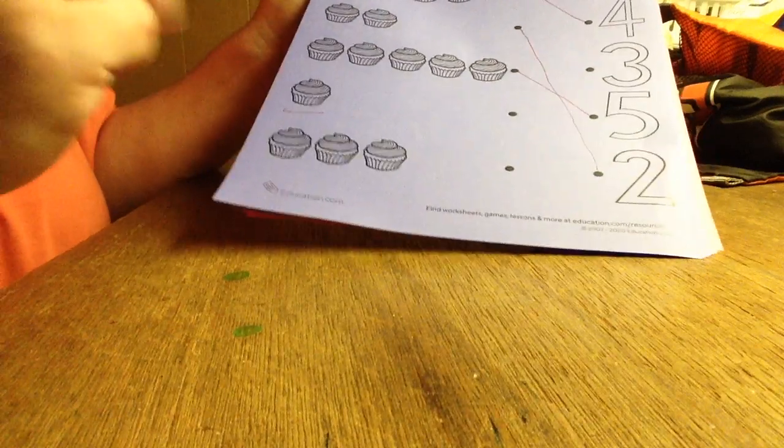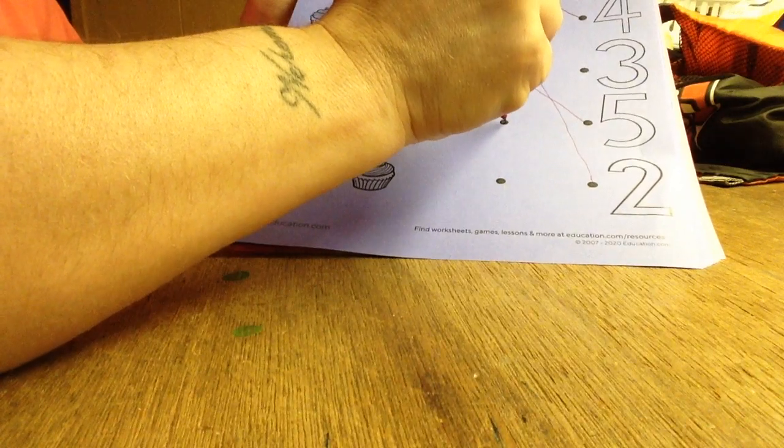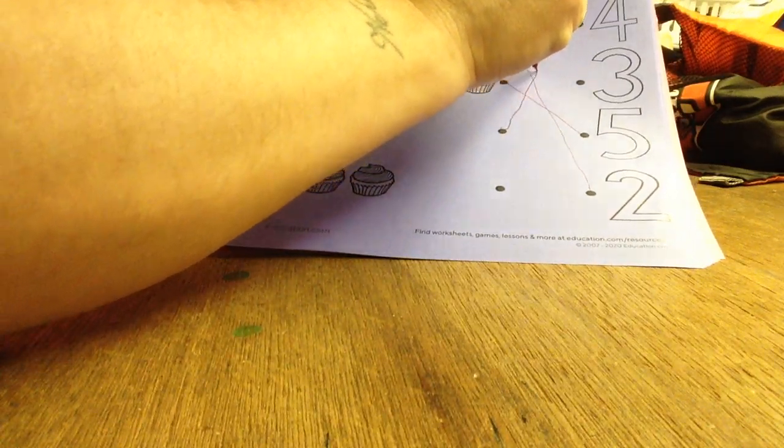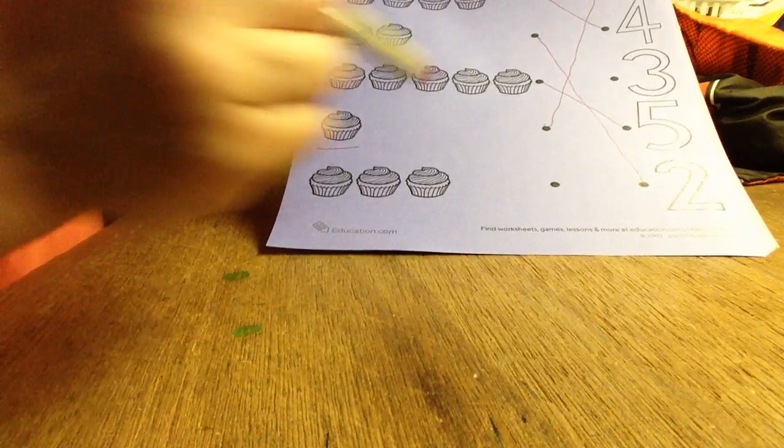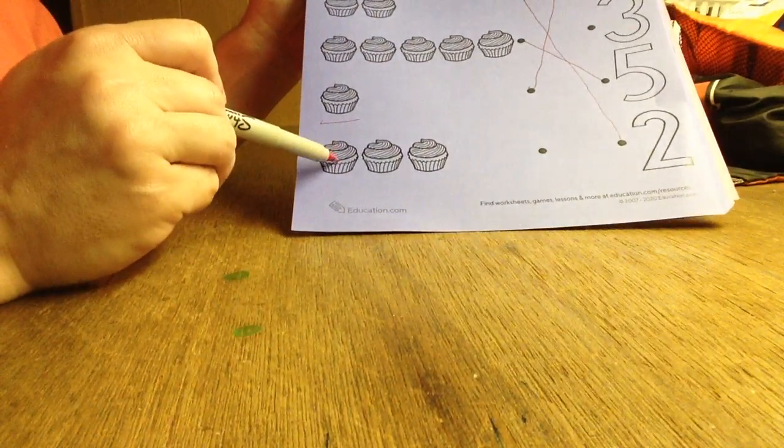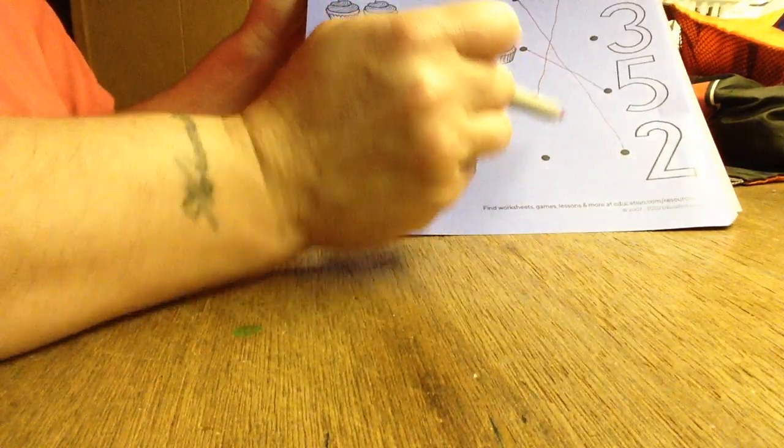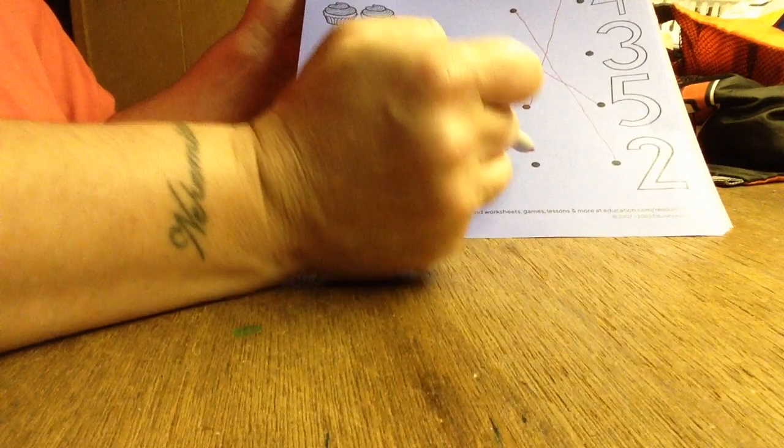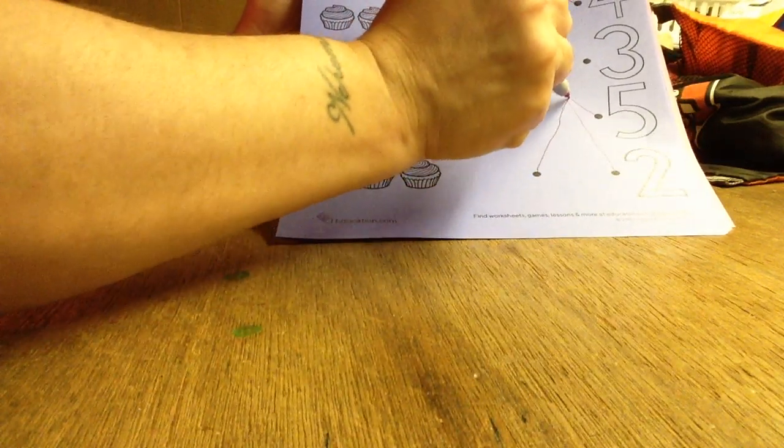Here to the top, and that's where our number one is. Very good. All right, and our last row of cupcakes is one, two, three. Now where's our three? Right here. Very good. So we draw our line and connect it.